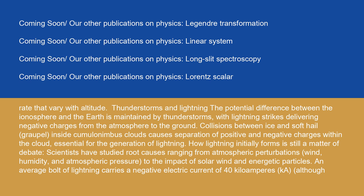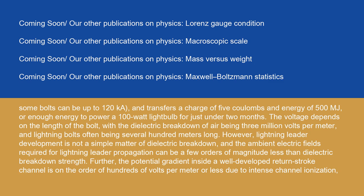Thunderstorms and lightning: the potential difference between the ionosphere and the Earth is maintained by thunderstorms, with lightning strikes delivering negative charges from the atmosphere to the ground. Collisions between ice and soft hail (graupel) inside cumulonimbus clouds cause separation of positive and negative charges within the cloud, essential for the generation of lightning. How lightning initially forms is still a matter of debate. Scientists have studied root causes ranging from atmospheric perturbations — wind, humidity, and atmospheric pressure — to the impact of solar wind and energetic particles. An average bolt of lightning carries a negative electric current of 40 kA, although some bolts can be up to 120 kA, and transfers a charge of 5 coulombs and energy of 500 MJ, or enough energy to power a 100 W light bulb for just under two months.